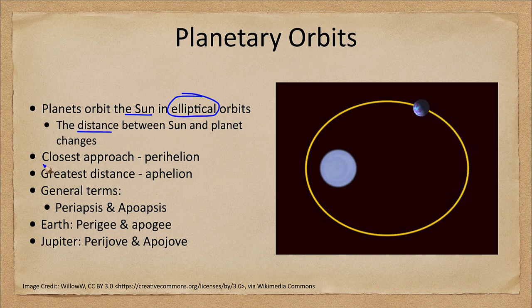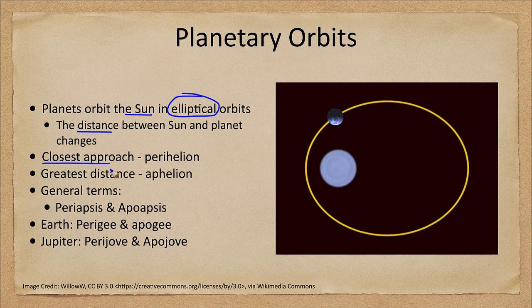We call the closest approach of the planet to its star perihelion, and the greatest distance of a planet from the sun is aphelion. We can see those in the orbit here as we watch this move around. At its closest approach here on the left-hand side, that would be perihelion.